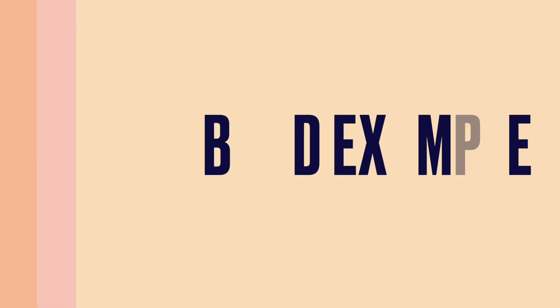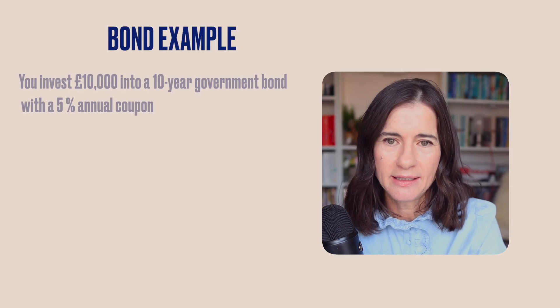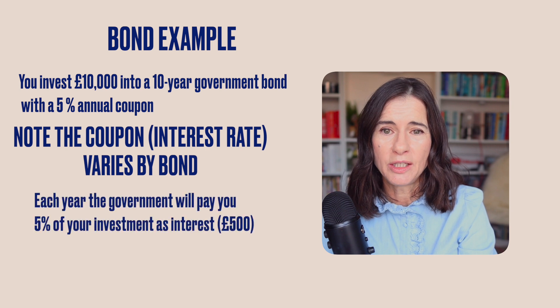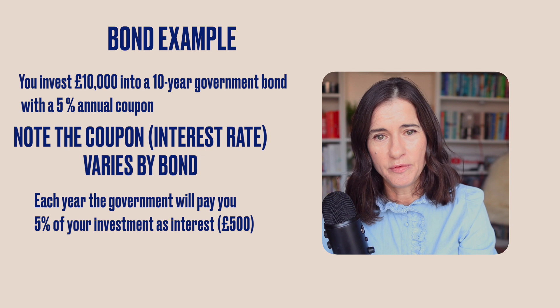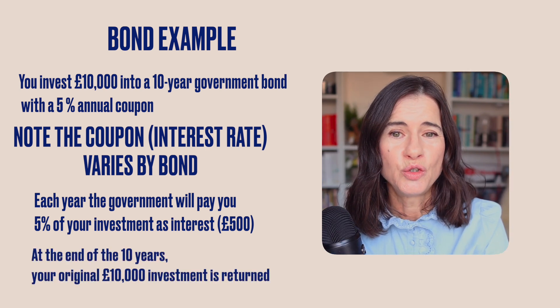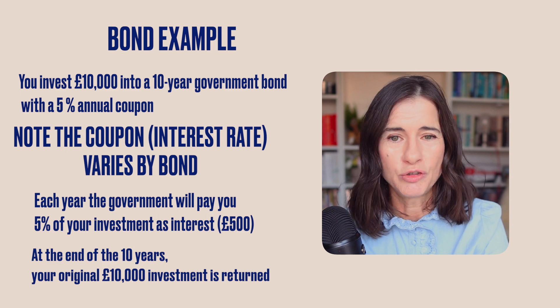Let's say you invested £10,000 in a 10-year government bond. Each year, the government will pay you 5% of your investment in interest, or £500. And at the end of the 10 years, your original £10,000 investment is returned back to you. Government bonds are considered to be a safe investment, because governments are usually reliable about paying back their debts.